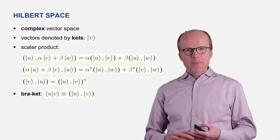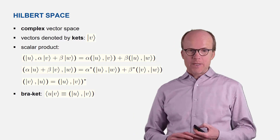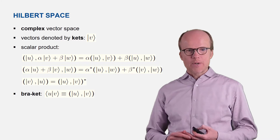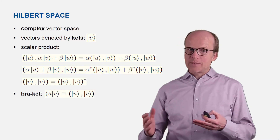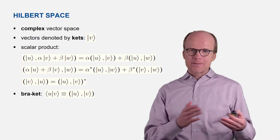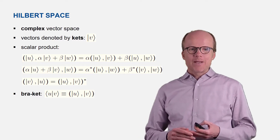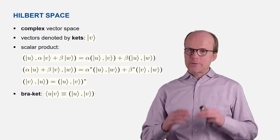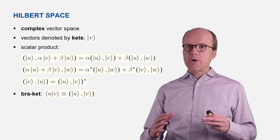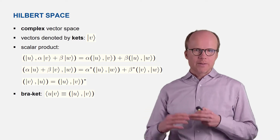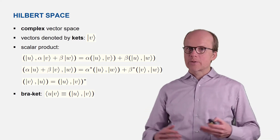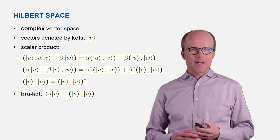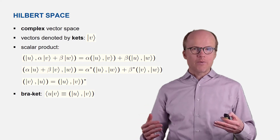When you have the scalar product of two vectors — two kets in the typical quantum theory notation — there is also a shorthand notation for that, called the bra-ket notation. You see on the left-hand side the first argument of the scalar product is written similar to a ket but with the angular bracket on the other side. The mathematical object on the left — the first argument of the scalar product — is called a bra, and the object on the right — the second argument — is called a ket. Together, when you write the scalar product, they form a bracket.